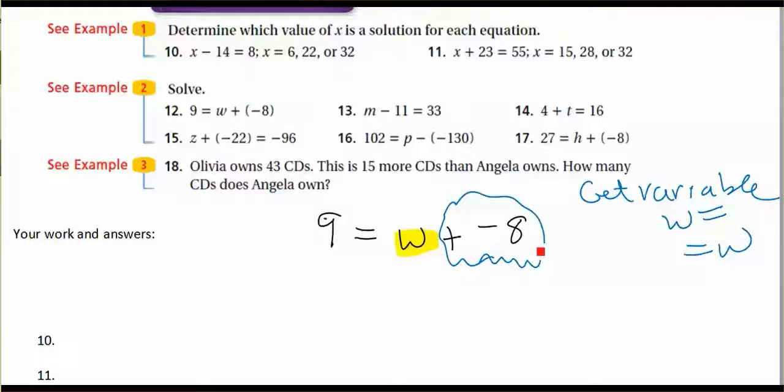And then we go ahead and we are going to add 8 to both sides to undo that negative 8. And when I say to both sides, I mean to both sides of the equal sign. So we have to do it over here as well. Negative 8 plus 8 is 0. You don't have to write 0. It will cancel.